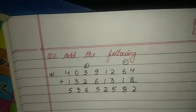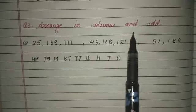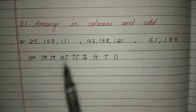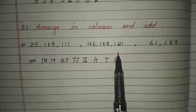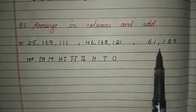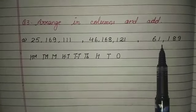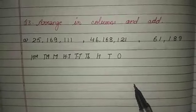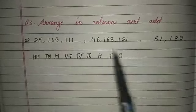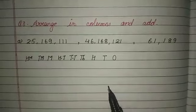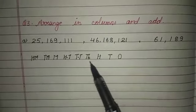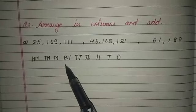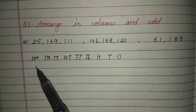Come to question number 3: arrange in columns and add. First of all, count the digits. The first number has 8 digits, the second one also has 8 digits, and the last one has 5 digits. When we are adding different numbers, it is better to write the places. Look at the numbers and see the commas — all numbers are in the International number system. The places are: 1, 10, 100, 1000, 10,000, 100,000, million, 10 million, and 100 million.